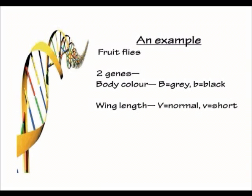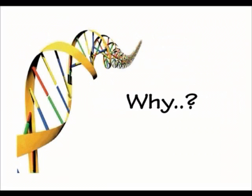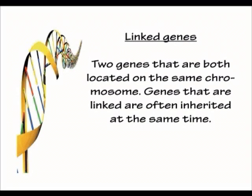For body color: big B (dominant) is gray, and small b (recessive) is black. For wing length: big V is normal wings, and small v is short wings. When we do an F1 cross with these heterozygous fruit flies, the ratios are a little bit different — we no longer get a 9:3:3:1 ratio. The reason these ratios are so different is because the genes for wing type and body color are actually linked genes.